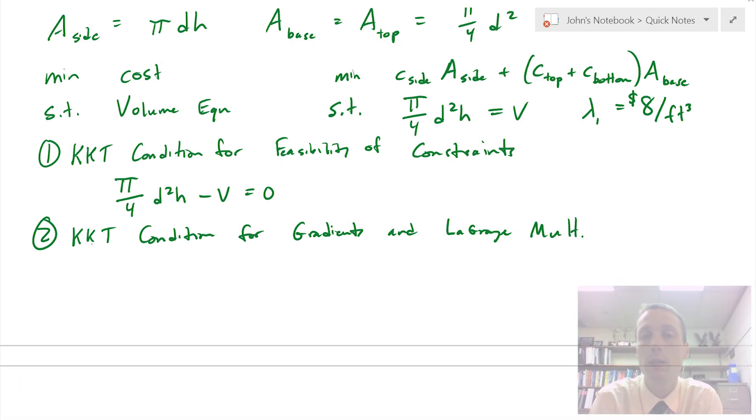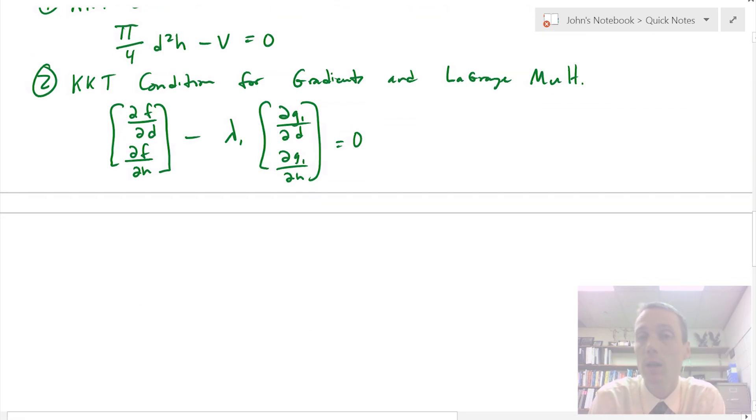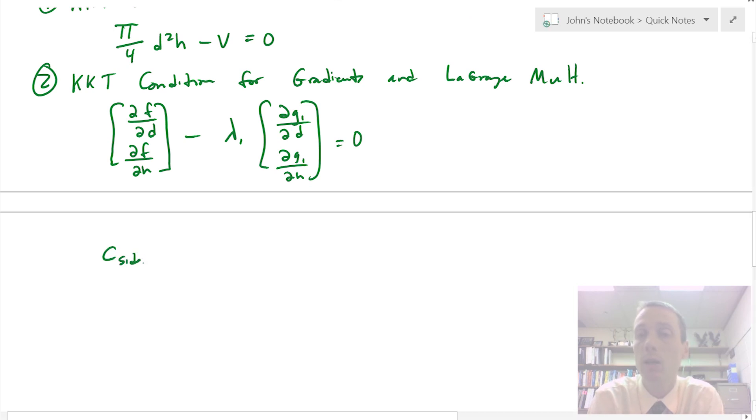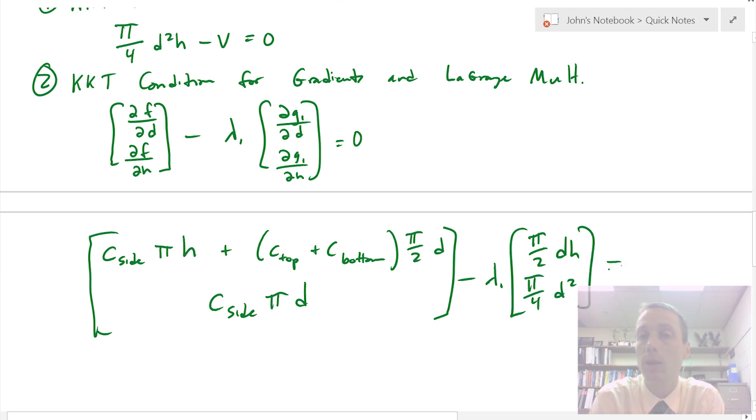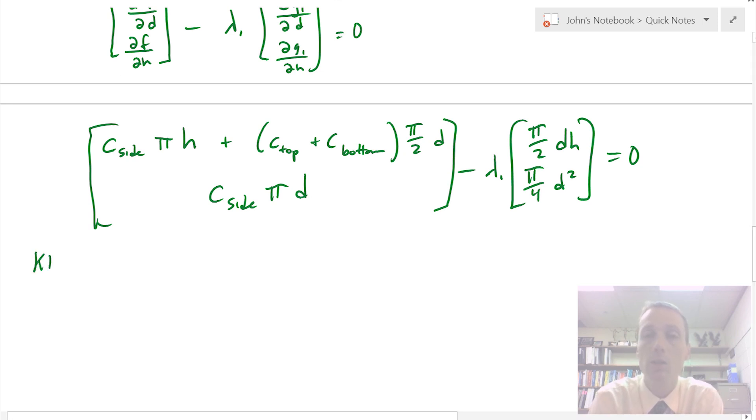Let's write out this one. The gradient of f with respect to d and the gradient of f with respect to h minus lambda 1, the Lagrange multiplier for the first equation, times the gradient of the constraint with respect to d and h. This is the partial derivative of the objective function with respect to d and the partial derivative of f with respect to h, subtracting the Lagrange multiplier with the gradients with respect to d and h of our constraint.